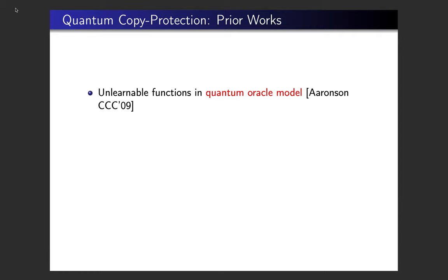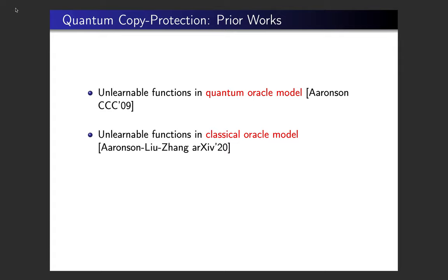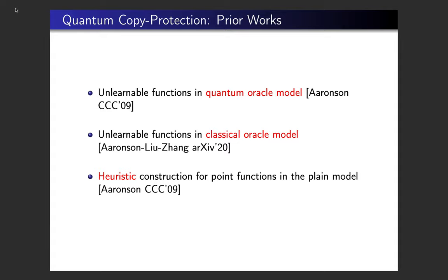What do we know about quantum copy protection? Aaronson, in the work introducing copy protection, gave a construction for all unlearnable functions in the quantum oracle model. In a more recent work, there was a construction for unlearnable functions in the classical oracle model, where the functionality in the oracle is classical but queries can be quantum (superposition) queries. In the plain model, only heuristic constructions for very specific functions — namely point functions — were known.